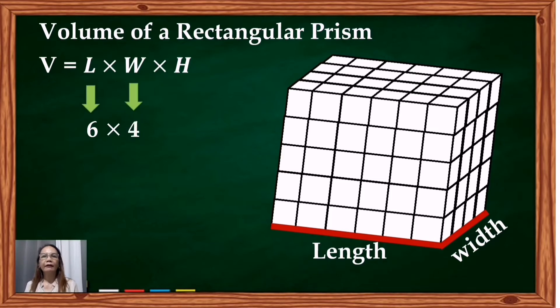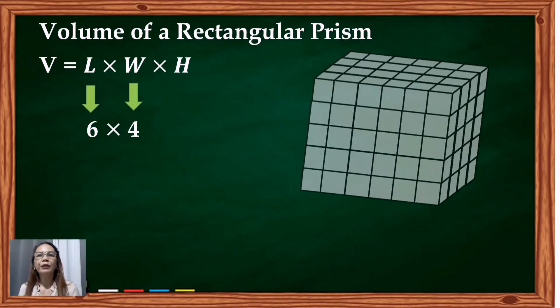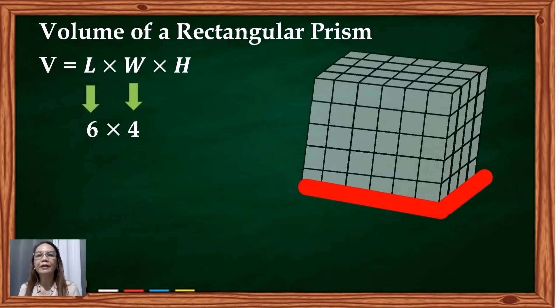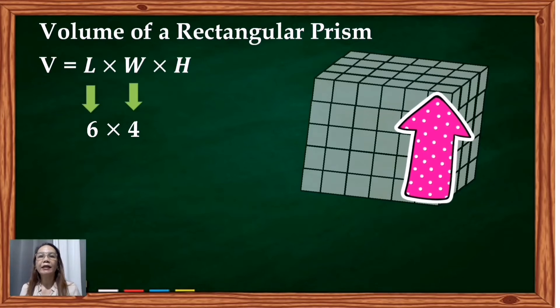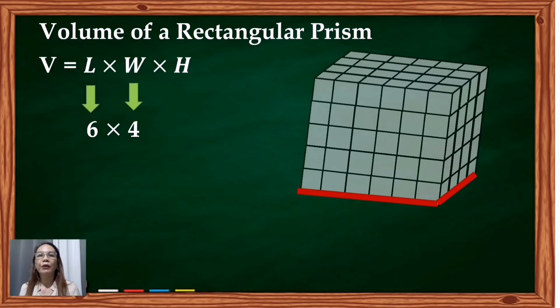Multiplying the length times the width will give you the area of the prism space. This is the two-dimensional measurement. After multiplying the length and the width or the area of the base of the rectangular prism, multiply it by its height that will give us the volume. Multiplying the area of the base by the height is filling up the prism or adding depth. This is what gives it a third dimension or we call it the height.